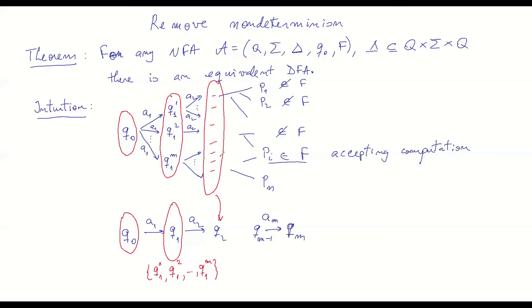I'm going to make this concrete in just a moment in terms of mathematical definitions, but it's important to understand the concept. When I get to the final step, that set of states is represented as one state. The idea is: when do I declare this computation accepting in the deterministic world? I'm going to declare a state final in the deterministic automaton if at least one of the states from the non-deterministic automaton was a final state. If all of them are non-final, then the corresponding state in the DFA is going to be non-final.